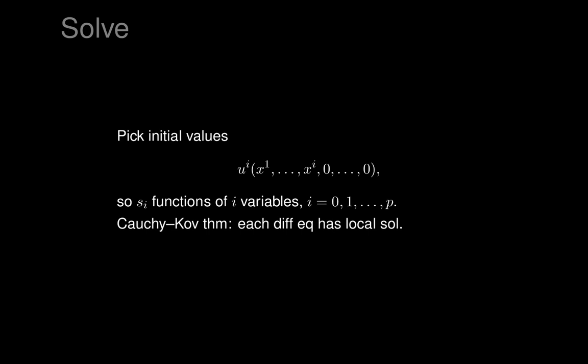The Cauchy-Kovalevsky theorem comes into play here. It says that the differential equation on the previous slide has a local solution with exactly this initial data. You get to pick the initial data and then carry out the construction of u_i as a function of x_{i+1} and so on in terms of that initial data. So we have local solvability — at each step we can extend our integral manifold to the next dimension.